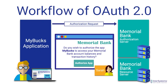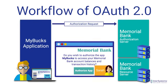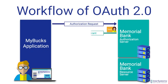The authorization server will display to Sarah a Memorial Bank authorization screen, asking her to authorize MyBucks to access her bank account. You may recognize these types of screens from other use cases, where a prompt tells you what permissions an application is requesting. In our Spotify example earlier, Facebook's authorization screen asked you to authorize Spotify to access your Facebook account information and profile picture. Sarah grants permission to MyBucks to access her account balances and transaction history via the Memorial Bank authorization screen.